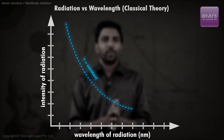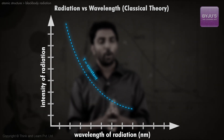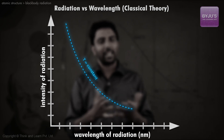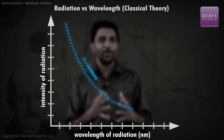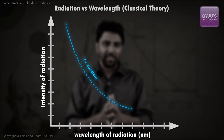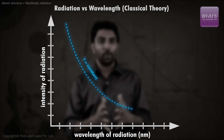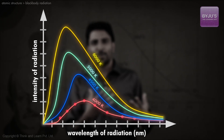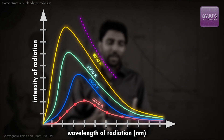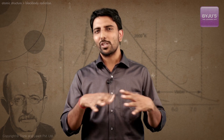Let me make this clear with this graph. The dotted line is what the graph should have been according to classical physics, but the experiment paints a very different picture. If we assume that the classical theory is right, it suggests that all objects in the universe should be infinitely bright — but this clearly is not true. This incorrect prediction is called the ultraviolet catastrophe. Definitely something was missing in the classical theory.